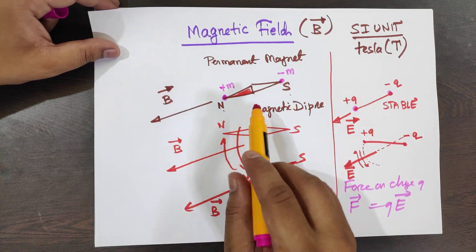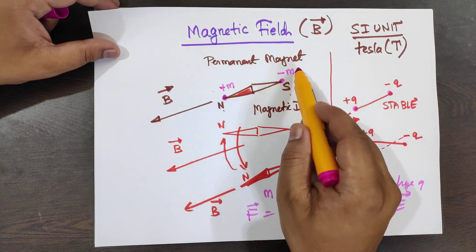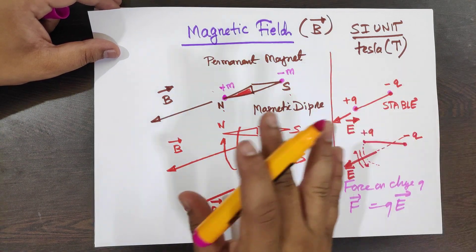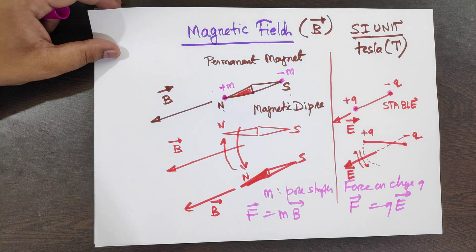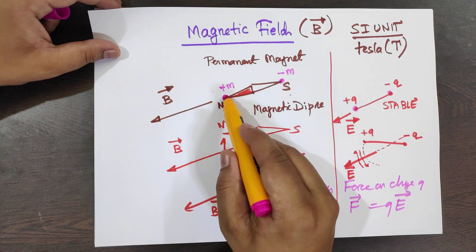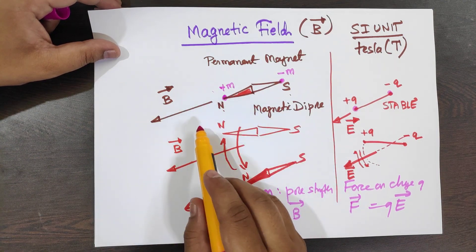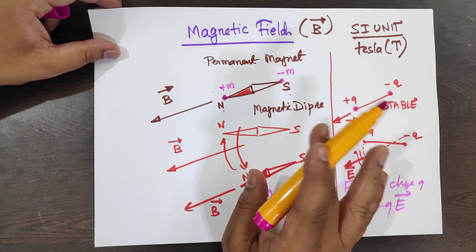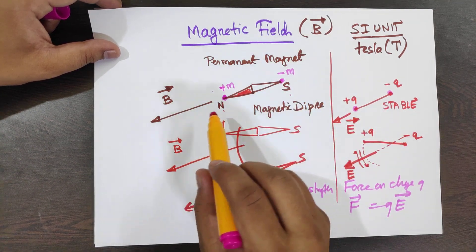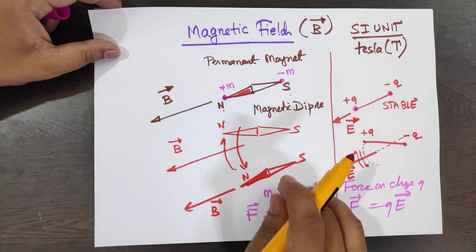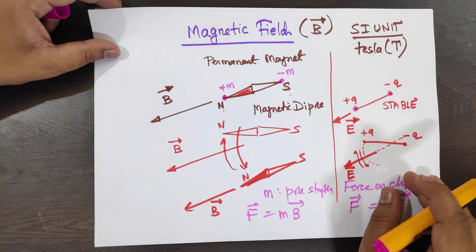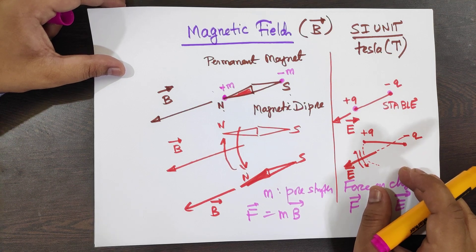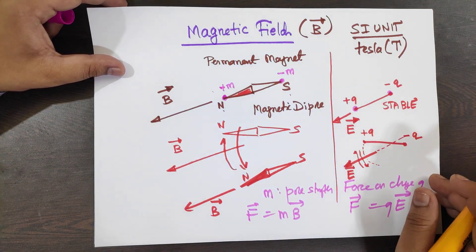Magnets occur in dipoles — a combination of plus M and minus M. We need to know the direction of the force: if you have a north pole, the direction of the force on this north pole explains the direction of the torque. But in reality there are no monopoles found till now.